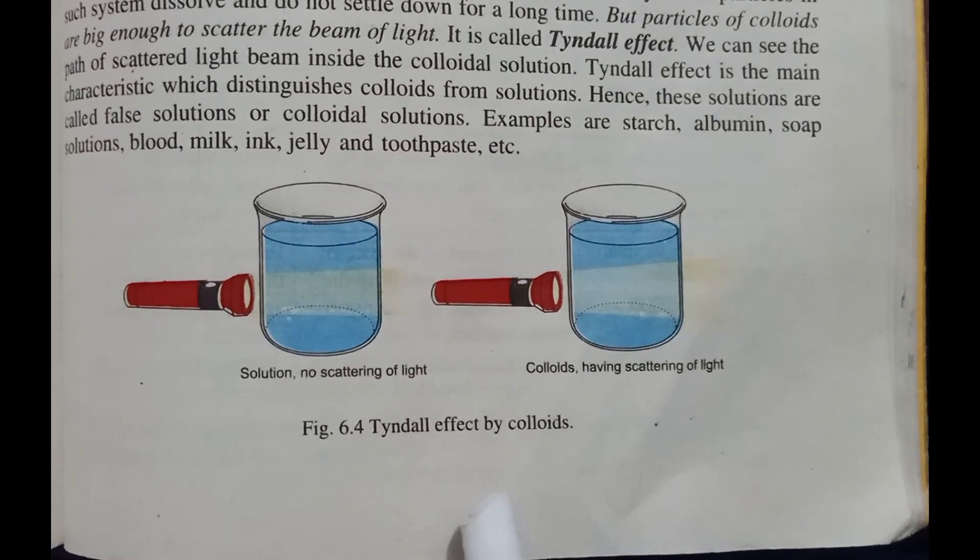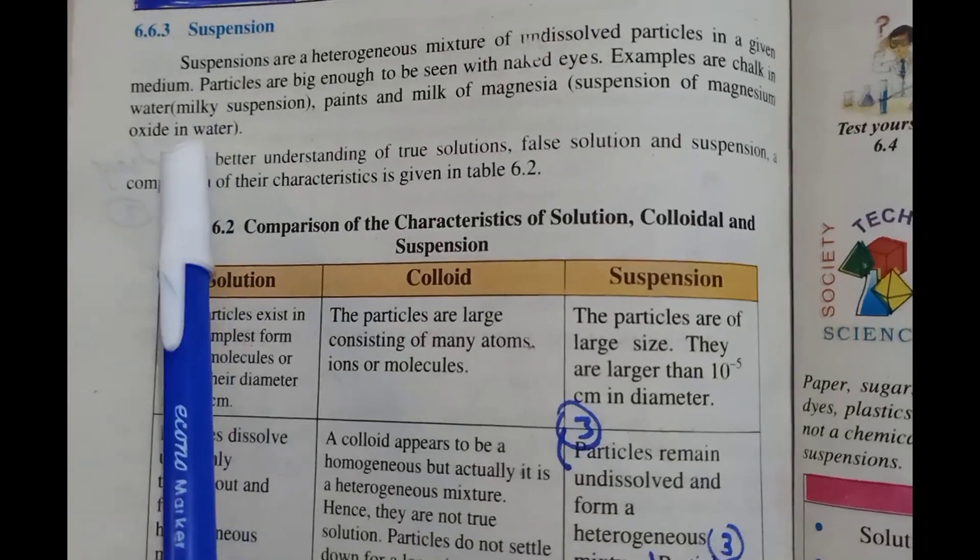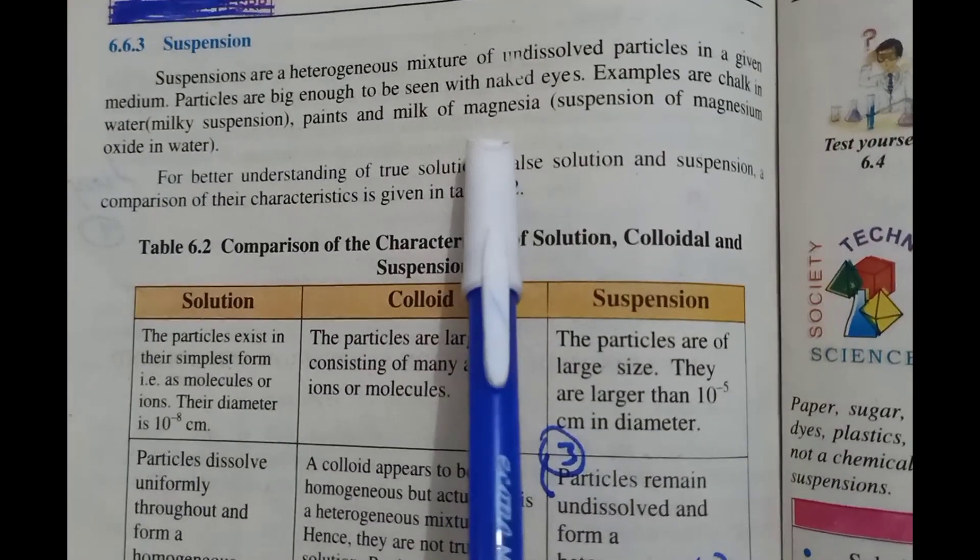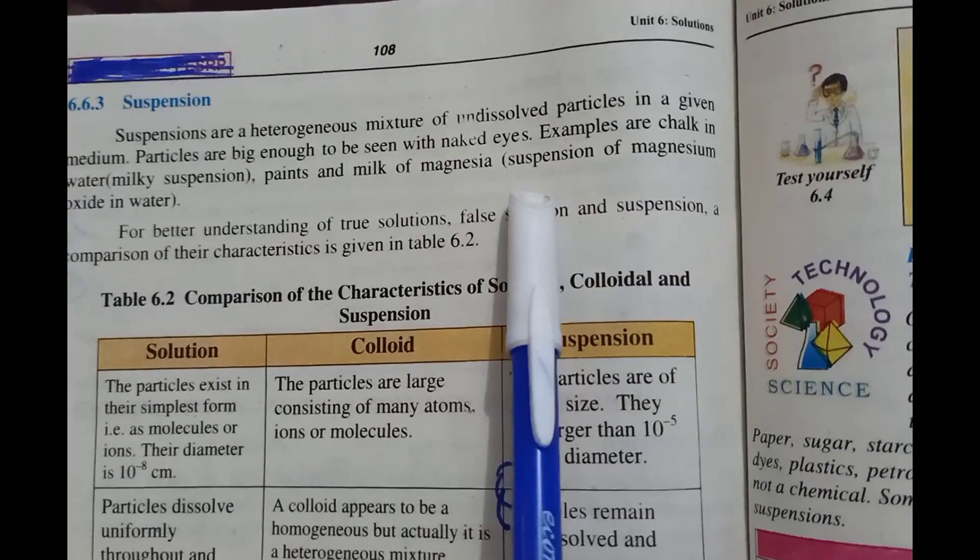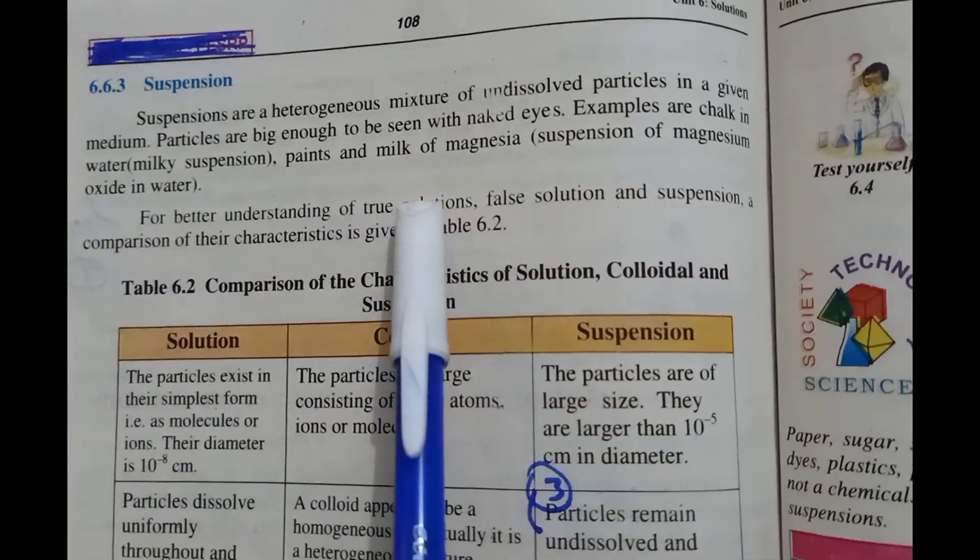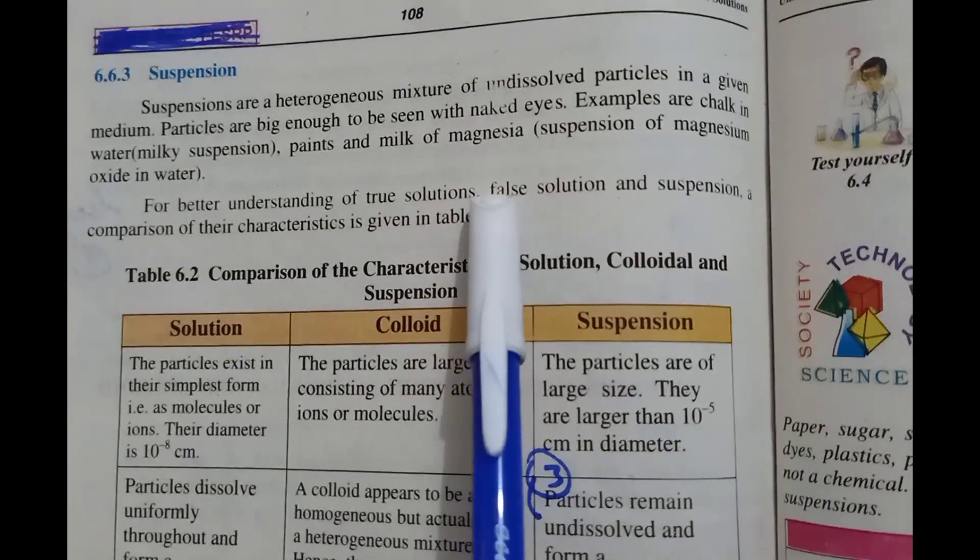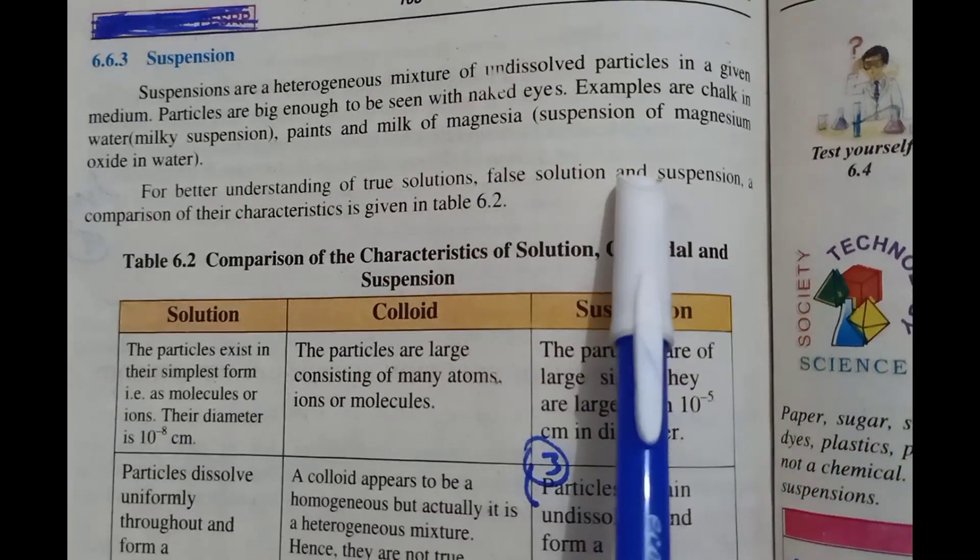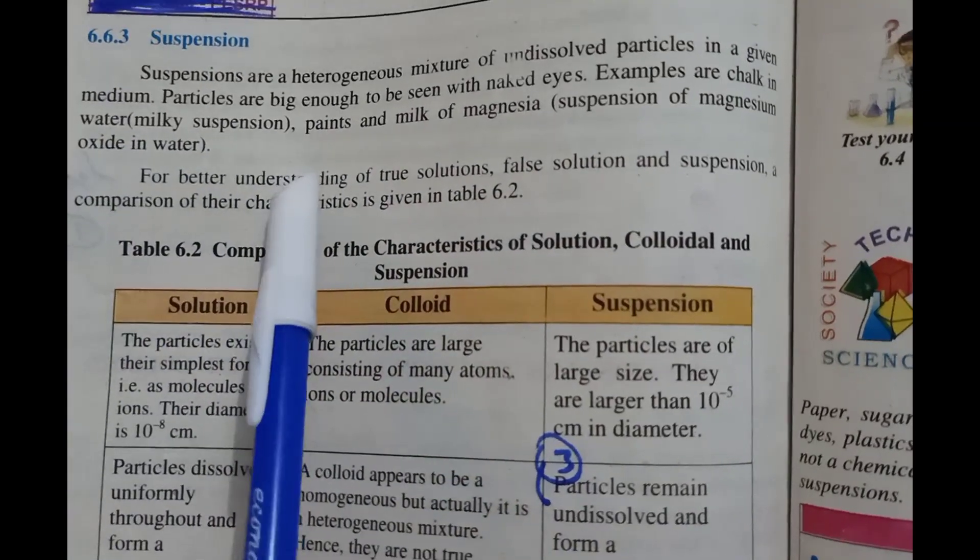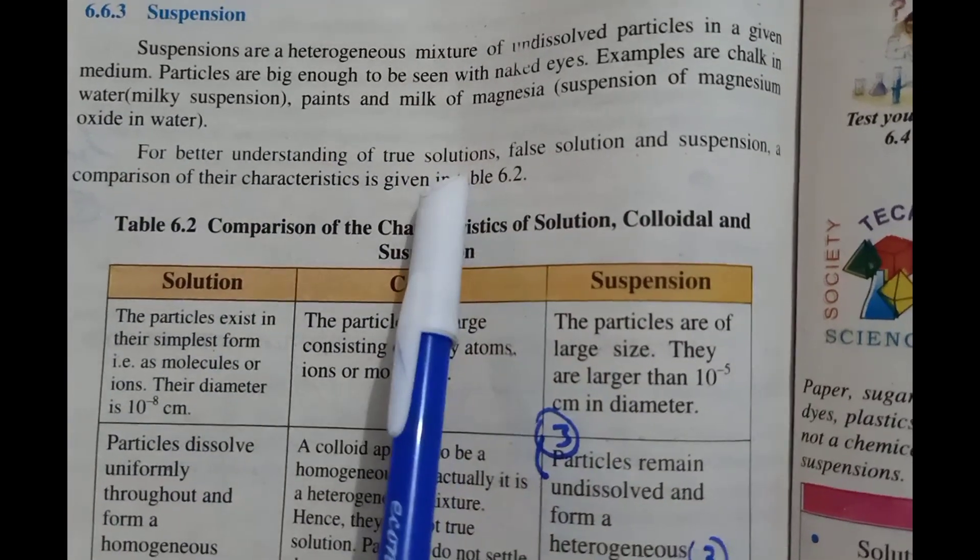Suspensions are heterogeneous mixtures of undissolved particles in a given medium. Particles are big enough to be seen with the naked eye. Examples are chalk in water, milk of magnesia which is suspension of magnesium oxide in water, paint, and muddy water. For better understanding of true solutions, false solutions, and suspensions, a comparison of...